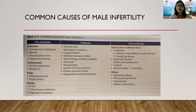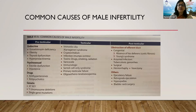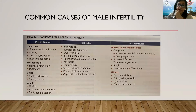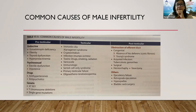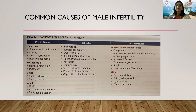Primary testicular failure is characterized by high FSH and LH levels with no spermatogonia. Oligoasthenoteratozoospermia (OAT) involves sperm that are low in number, with reduced motility, and poor morphology — all impacting fertility. Post-testicular causes include obstruction of the efferent ducts, congenital bilateral absence of the vas deferens (as in cystic fibrosis).